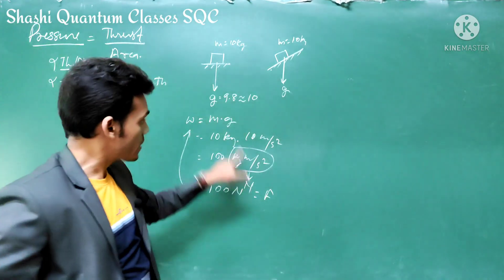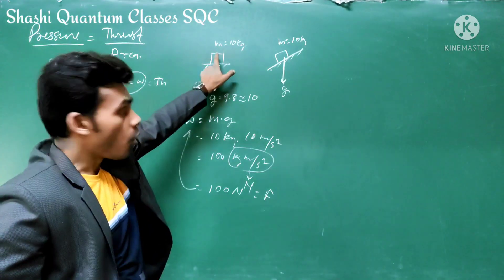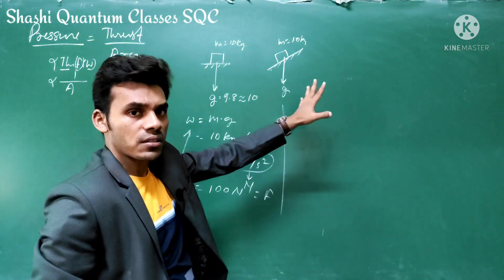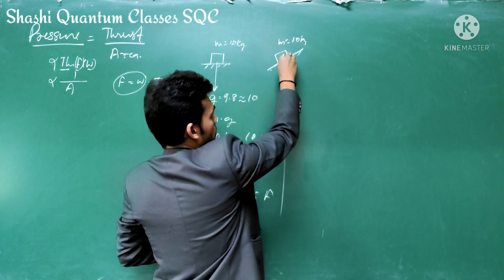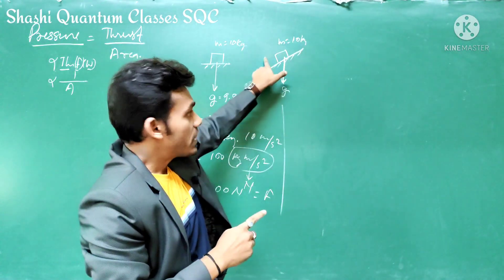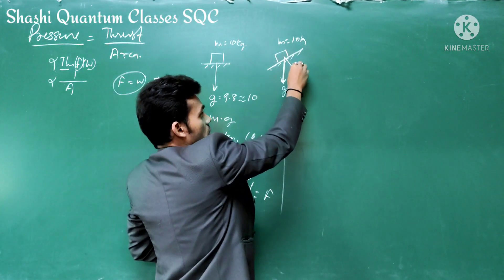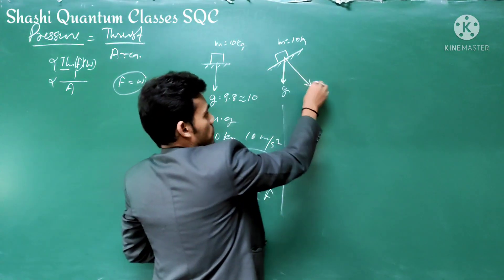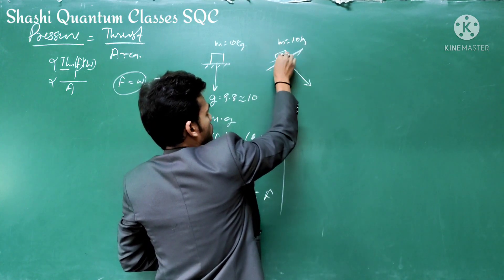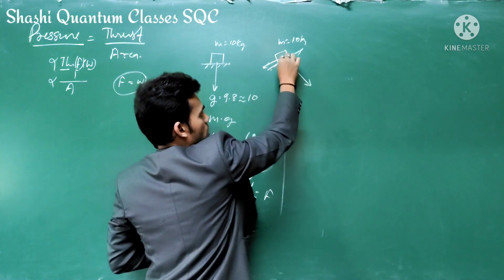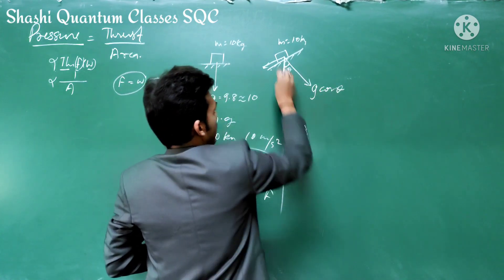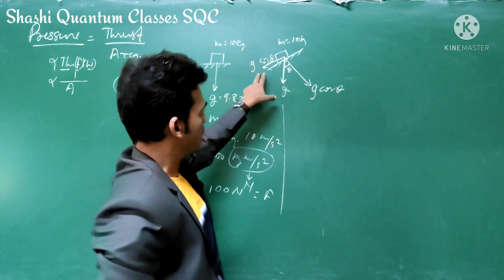In the case of the inclined surface, it is completely different. Because of the inclination, the acceleration due to gravity is resolved into components. Suppose the angle of inclination is theta. Then one component is g cos theta, perpendicular to the inclined surface, and the other component is g sin theta, along the surface.